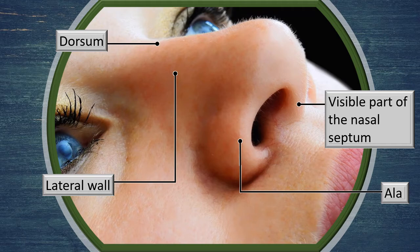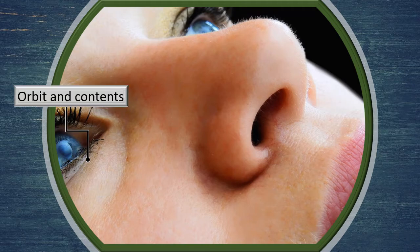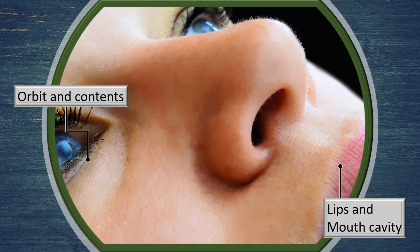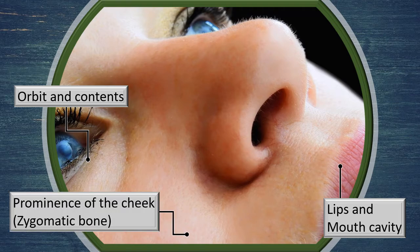The lateral wall is a generic term: the upper part is bony and the lower part is cartilaginous. In the near vicinity, especially on either side of the bridge of the nose, is the orbital cavity and its contents — better appreciated on a dry skull but an important point of reference. Below the philtrum are the lips and mouth cavity, important inferior relations. More laterally, immediately below the orbit, is the prominence of the cheek, where deep inside lies the zygomatic bone.